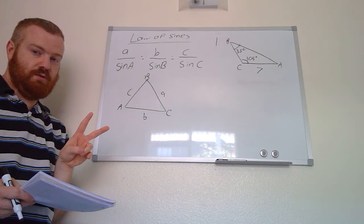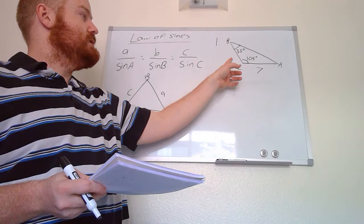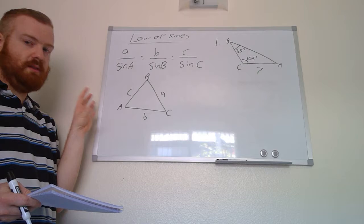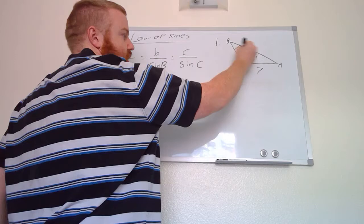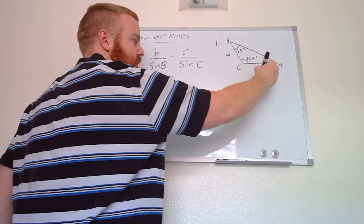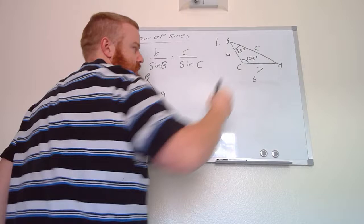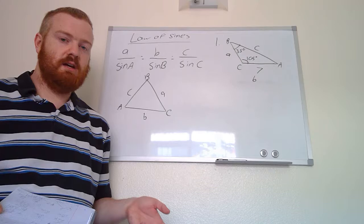In the first example we have triangle ABC — a slightly different orientation, but that doesn't matter. The only thing that matters is side a is opposite angle A, side b is opposite angle B, and side c is opposite angle C. Since this is angle A, the side across from it is side a. The value of seven is side b, and the remaining side is side c.